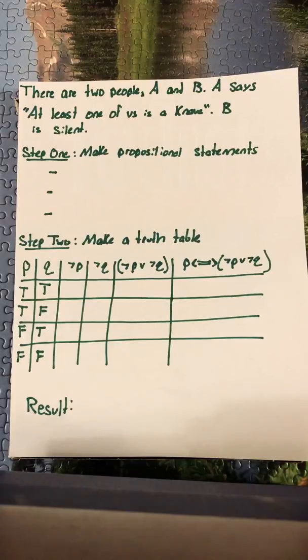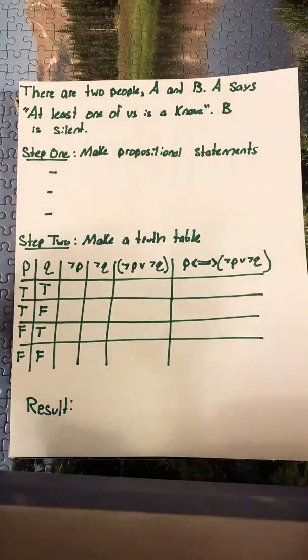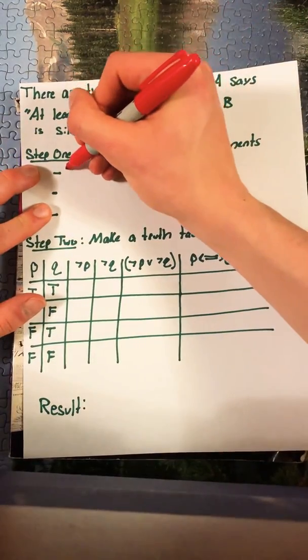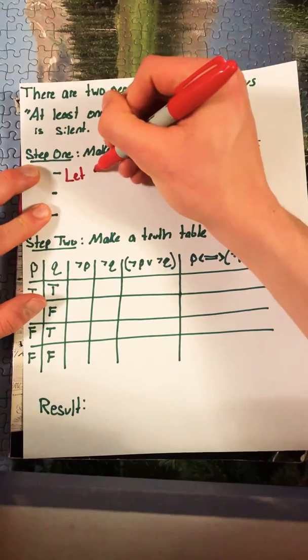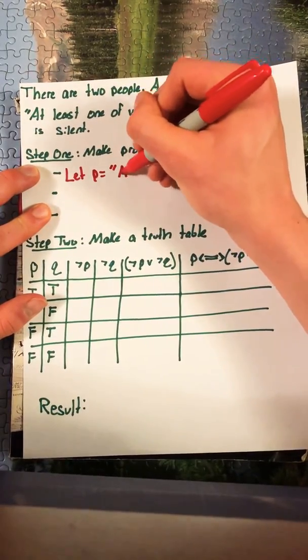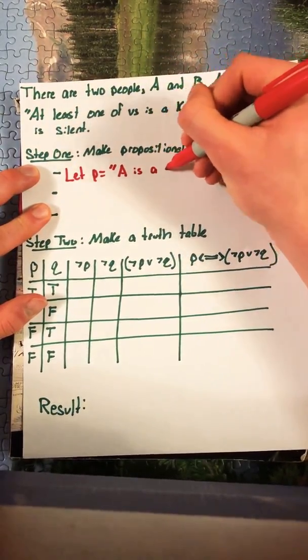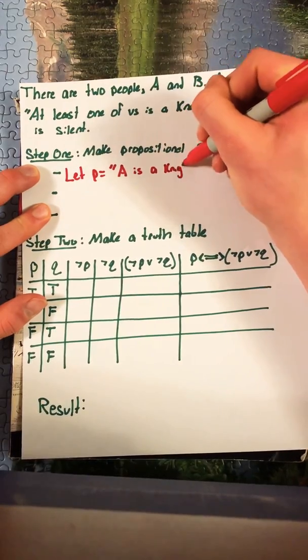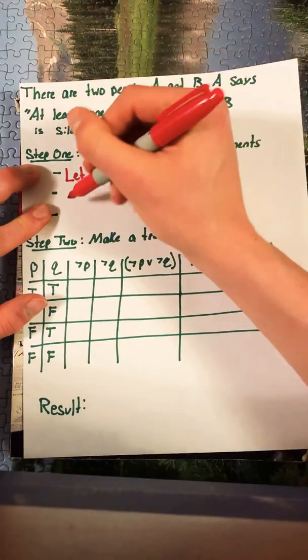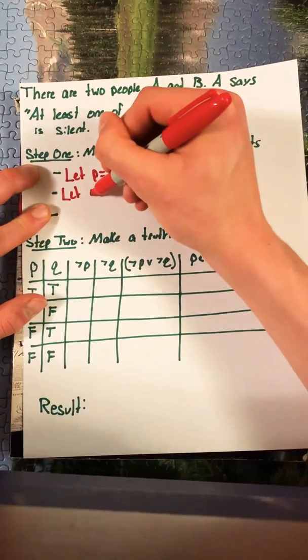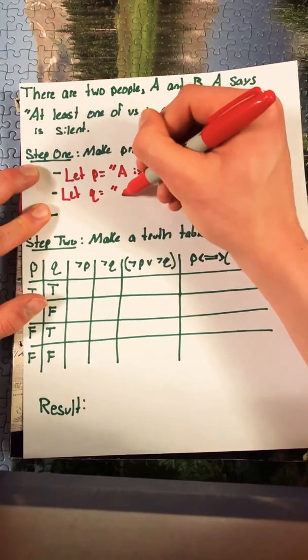To solve this problem we first want to make some propositional statements. In order to do that we're going to make some propositional variables first. We can say let P equal A is a Knight and let Q equal B is a Knight.